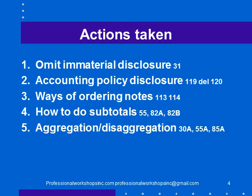So this is what was done. There were five major things, and I have referred to the major sections that were amended — there were other sections amended as well, but these are the significant ones. The five things were: to omit immaterial disclosure, consider accounting policy disclosure, consider the ways of ordering notes, consider how to do subtotals, and consider aggregation and disaggregation.